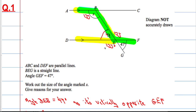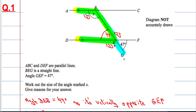Another reason: angle ABE and DEG form an F shape, and that means that these two angles are corresponding to each other. So there are three reasons you could have given. Try and figure out what X is first and foremost, and then write down the reasons for your answer.